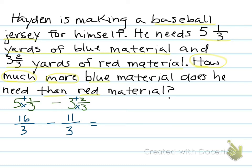Okay, so now I can subtract, because 16 can take away 11. 16 minus 11 is 5. Denominator stays the same. So that means he'll need 5/3 yards more material.